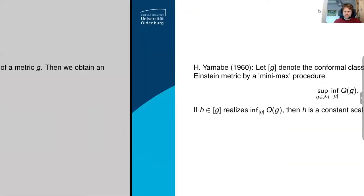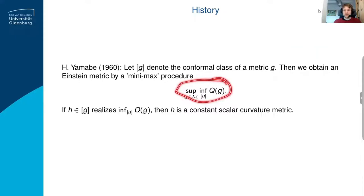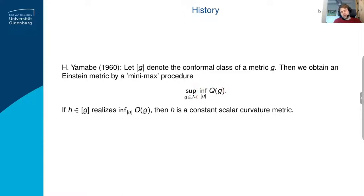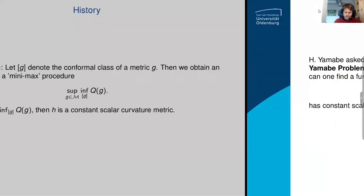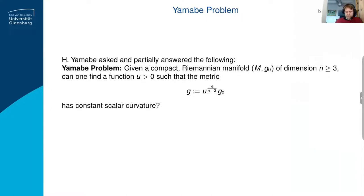This was Yamabe's idea: if you have a metric which realizes this sup-inf, then that's actually an Einstein metric. Furthermore, if the infimum is actually a minimum, then that minimum is a constant scalar curvature metric. So step one of Yamabe's ideas is to study this procedure. As it often turns out in mathematics, a great idea that seems like two steps — step one becomes a 20-year research project, which was Yamabe's case.